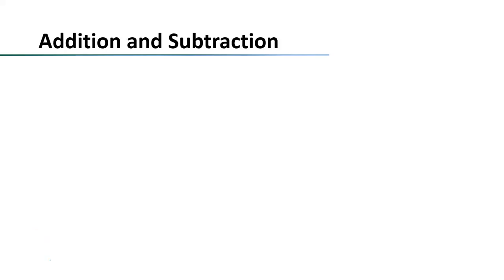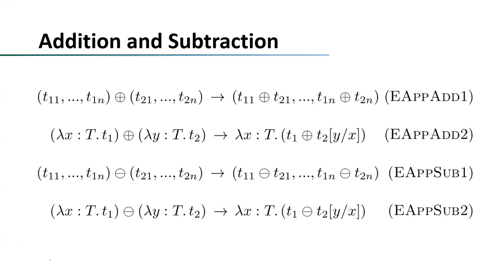Next we introduce addition and subtraction. The reduction rules for addition and subtraction are rather simple — they just propagate the operator into the body of data structures and functions. When these operators propagate, they finally end on some base type terms, where they become normal addition and subtraction on base type. So addition and subtraction here can be viewed as an extension of base type addition and subtraction.